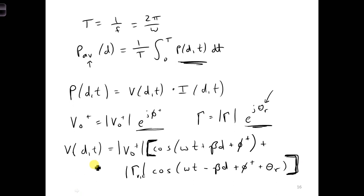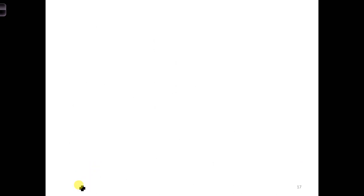Analogously, we can write the instantaneous current. I of D,T is just V of D,T over Z naught. We can plug these two expressions in for the instantaneous voltage and the current, and we can determine an instantaneous power.